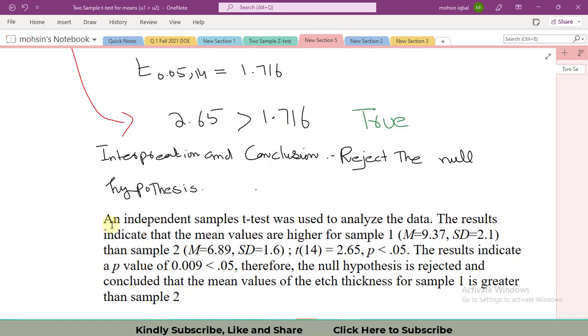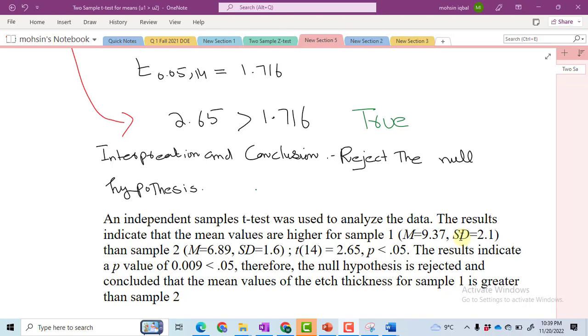In the report in the APA style, an independent samples t-test was used to analyze the data. The results indicate that the mean values are higher for sample 1, where M represents the mean and SD represents the sample standard deviation, than sample 2; t(14) = 2.65.